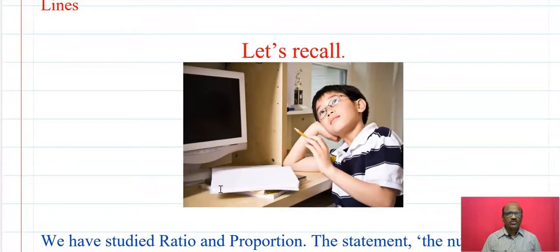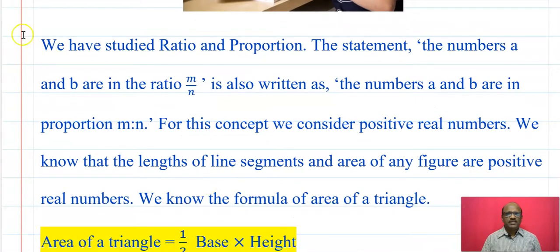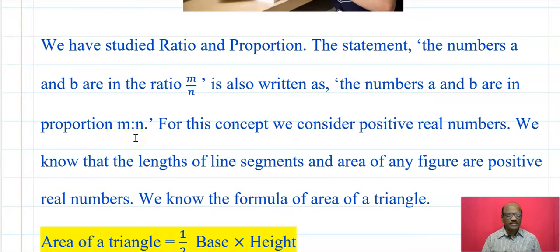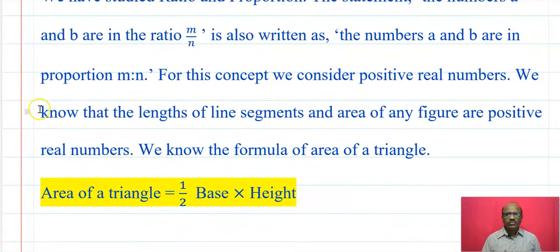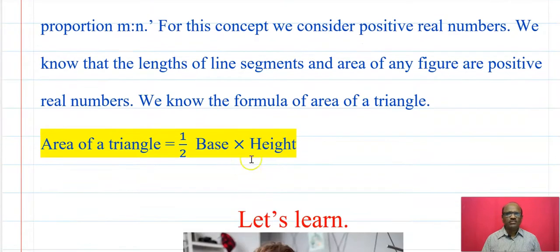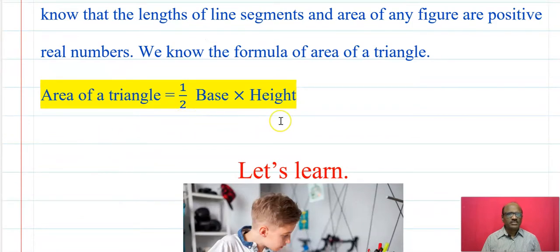Now let us recall some basic concepts. We have studied ratio and proportion. The numbers a and b are in the ratio m upon n, also written as a and b are in proportion m to n. For this concept we consider positive real numbers. We know that the length of a line segment and the area of any figure are positive real numbers. Now let us recall the formula for the area of a triangle, which is 1/2 × base × height.